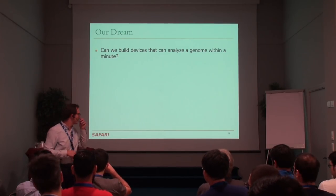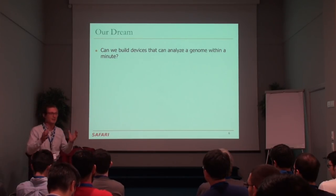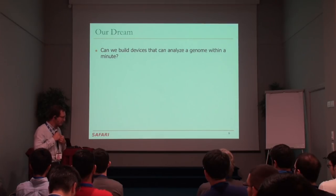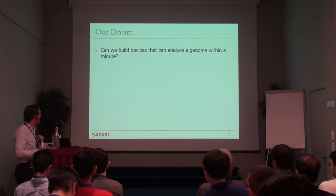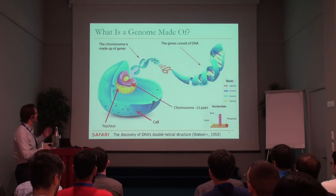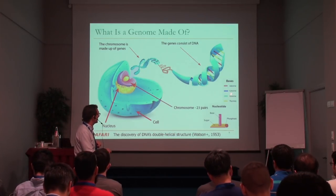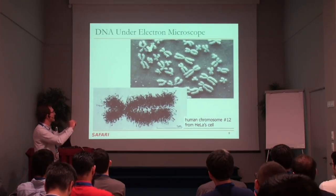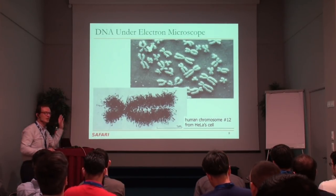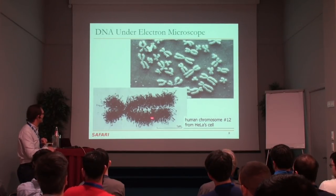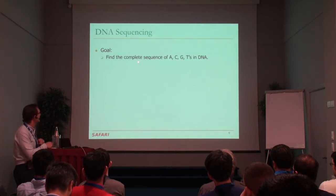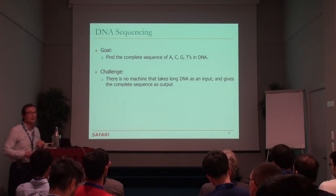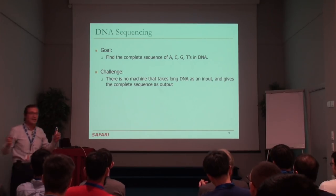That was clearly a dream in 2007. At that time, we didn't even have embedded genome sequencers. Today we do, which is why this is exciting — believing in the technology is very good. If you look at a genome, it has these ACTG bases, and you'd like to understand what a genome is made of by figuring out the sequence of ACTGs. The goal is to find the complete sequence of ACTGs in someone's DNA — or a virus, or some animal.